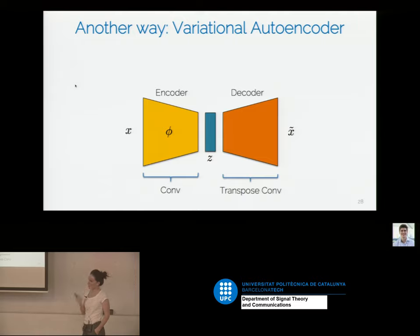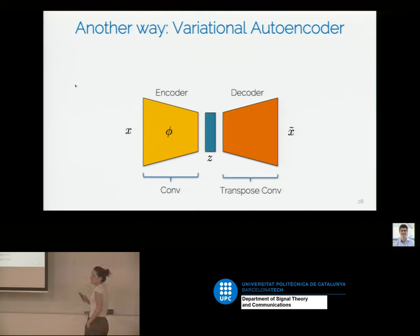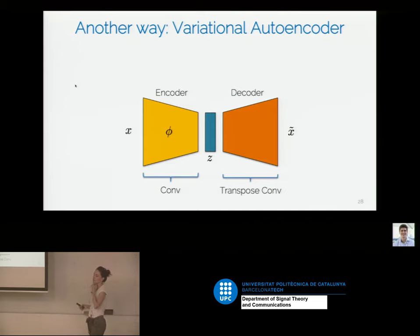Question about what happens when one class owns probability one and the rest own zero. This method is not going to work well in that case with updating. But this is general for the variational view, not particular to neural networks.